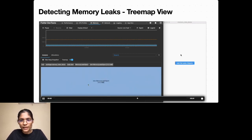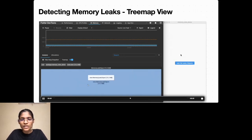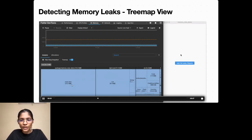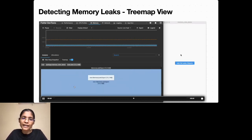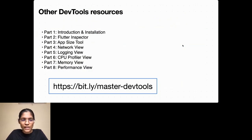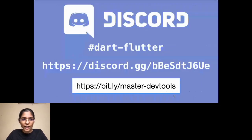If we keep clicking Add 1 Million Leaky Objects, the heap size keeps increasing until total allocated memory exceeds available device memory and the app crashes. There are other DevTools as well: Flutter Inspector, App Size Tool, Network View, and Logging View. You can read detailed Medium articles with stepwise images for all of them. In case you have any questions, you can also join the Discord channel.